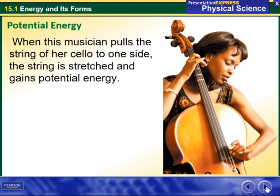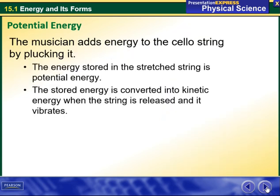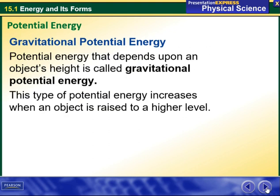When this musician pulls the string of her cello to one side, the string is stretched and gains potential energy. The musician adds energy to the cello string by plucking it. The energy stored in the stretched string is potential energy. The stored energy is converted into kinetic energy when the string is released and it vibrates.